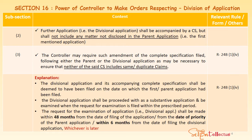Section 16 Subsection 2: The further application, i.e. the divisional application, is accompanied by the complete specification, but it will not include any matter that has not been disclosed in the parent or first-mentioned application. No new matter can be included in the divisional application. Whatever subject matter has already been disclosed in the complete specification of the parent or first-filed application, the divisional application should be filed on that basis only. No new subject matter can be included.